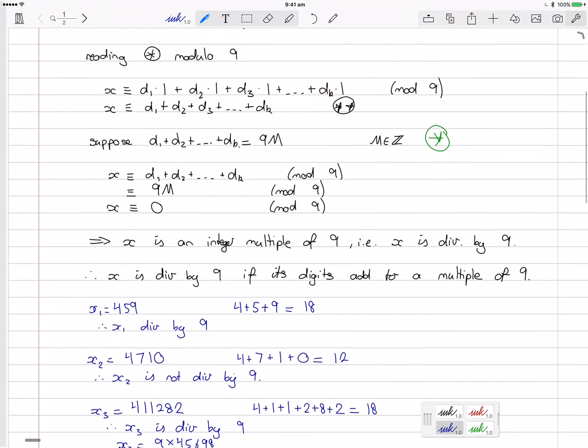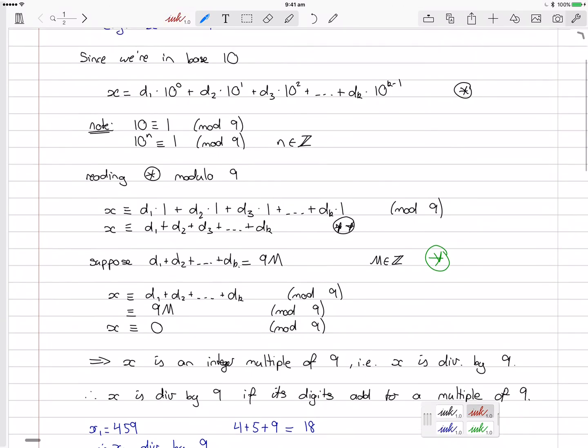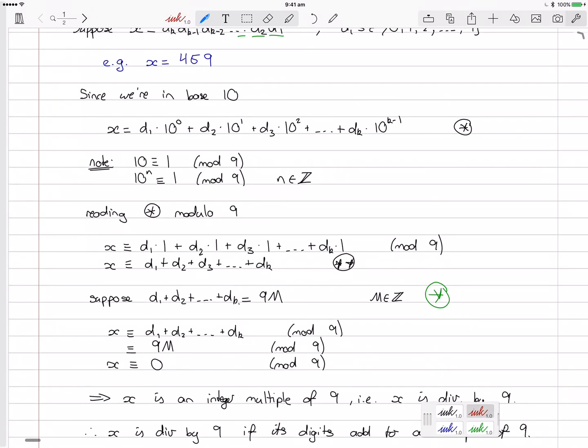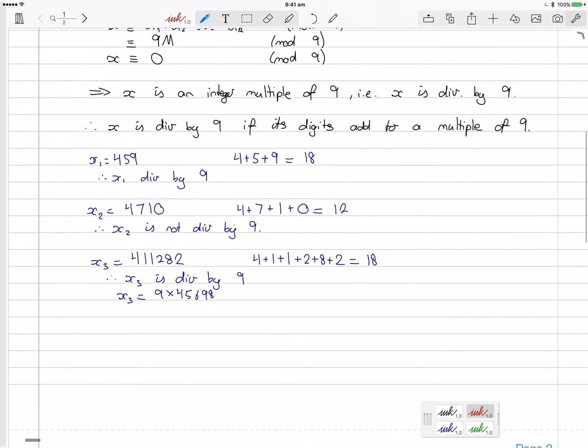Now the divisibility by 3 is almost identical in proof. The only difference is that here, we say that 10 is equivalent to 1 mod 3, which of course is a true statement. And so again, 10 to the power of some integer would be equivalent to 1 mod 3. And then our proof would follow along as we've had before.